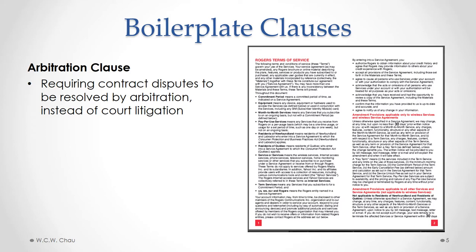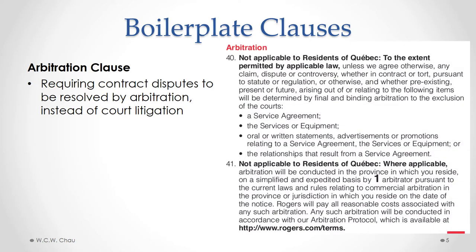In the Rogers terms of service there is an arbitration clause — in sections 40 and 41. Essentially, section 40 says that if there's a dispute under the contract, it has to be resolved by final and binding arbitration. In other words, if you are a customer and you have a dispute with Rogers and you want to sue them, you can only do so by submitting to this arbitration process which Rogers has set up. This takes away your right to sue in court — in particular, if the amount you're suing for is under $25,000, you can't sue them in small claims court, which could actually be cheaper and maybe even faster than going through Rogers' arbitration process.